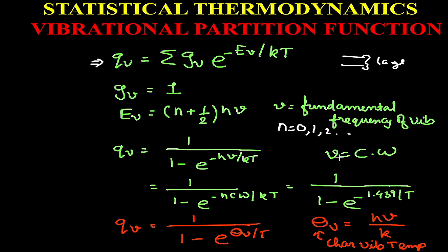where ν can be written as c·ω, where c is the velocity of light and ω is the vibrational frequency in wavenumber. The unit of ω is cm^-1.